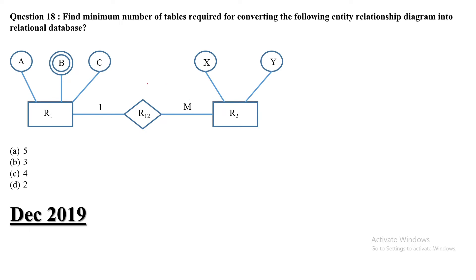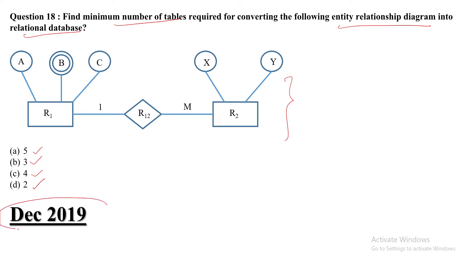This is question number 18. Find the minimum number of tables required for converting the following entity relationship diagram into a relational database. Option A: 5, Option B: 3, Option C: 4, Option D: 2. This question was asked in December 2019.